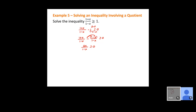Now, just like last week when we had polynomials, once we have our factors we set each factor equal to zero. Once I have my numerator and denominator with nothing left to factor or simplify, I take each one and set it equal to zero: 2x = 0 and 1−x = 0. These give us our critical numbers for the number line.